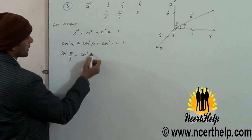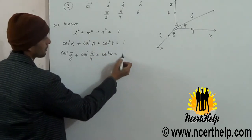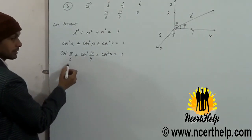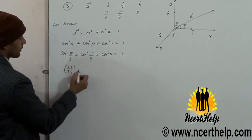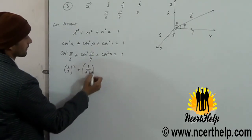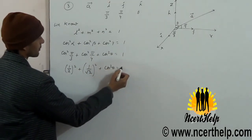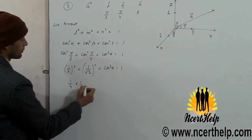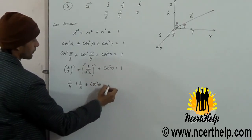So we apply the formula: cos²(π/3) + cos²(π/4) + cos²θ = 1. Cos 60° = 1/2, so (1/2)² = 1/4. And (1/√2)² = 1/2. So: 1/4 + 1/2 + cos²θ = 1.